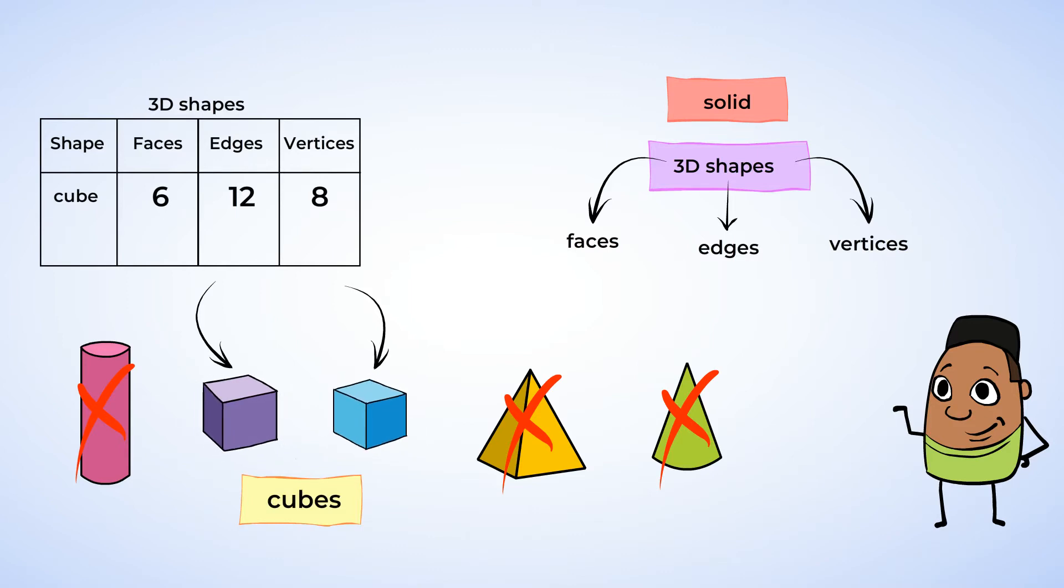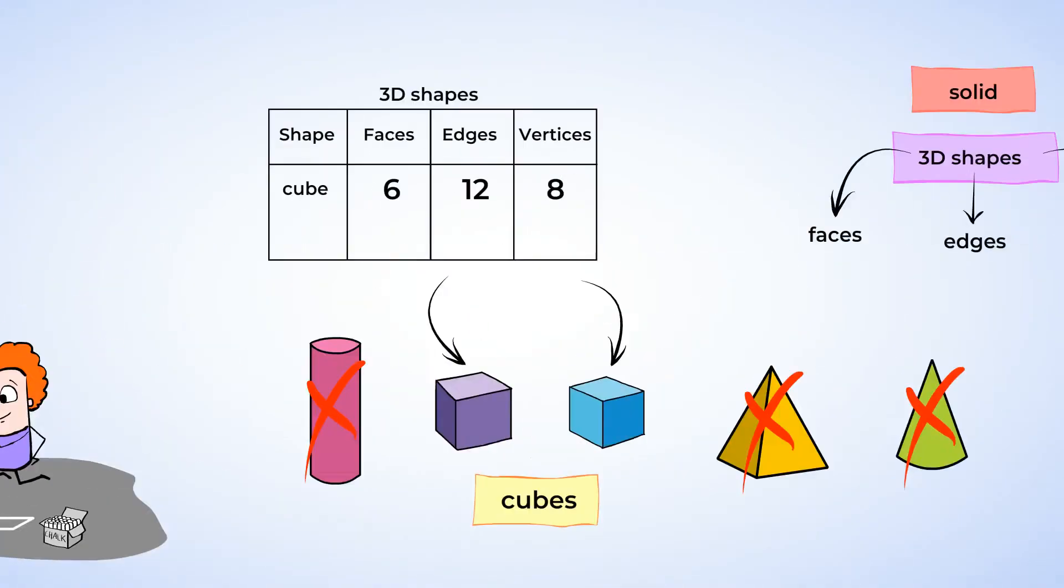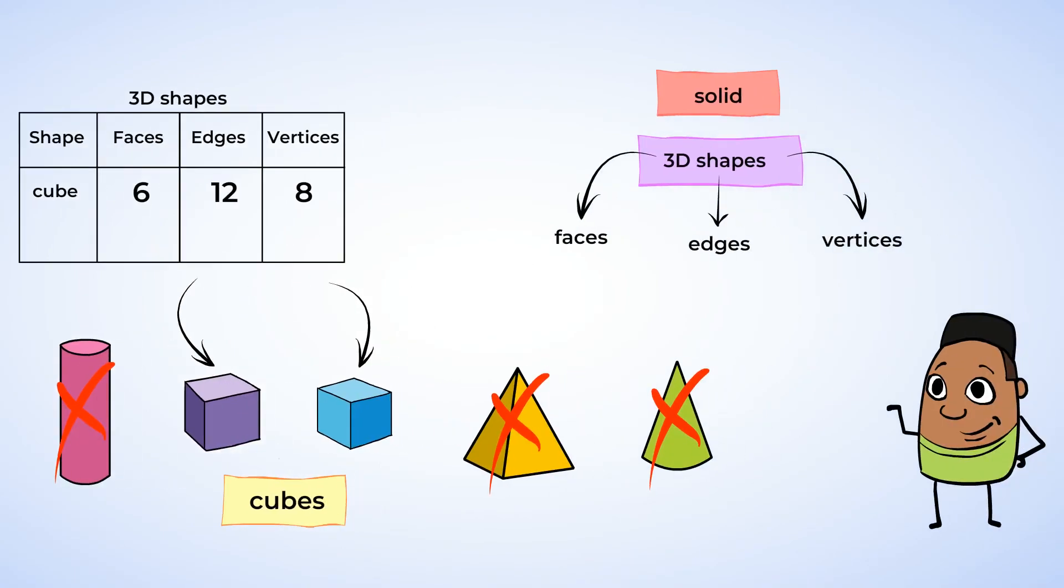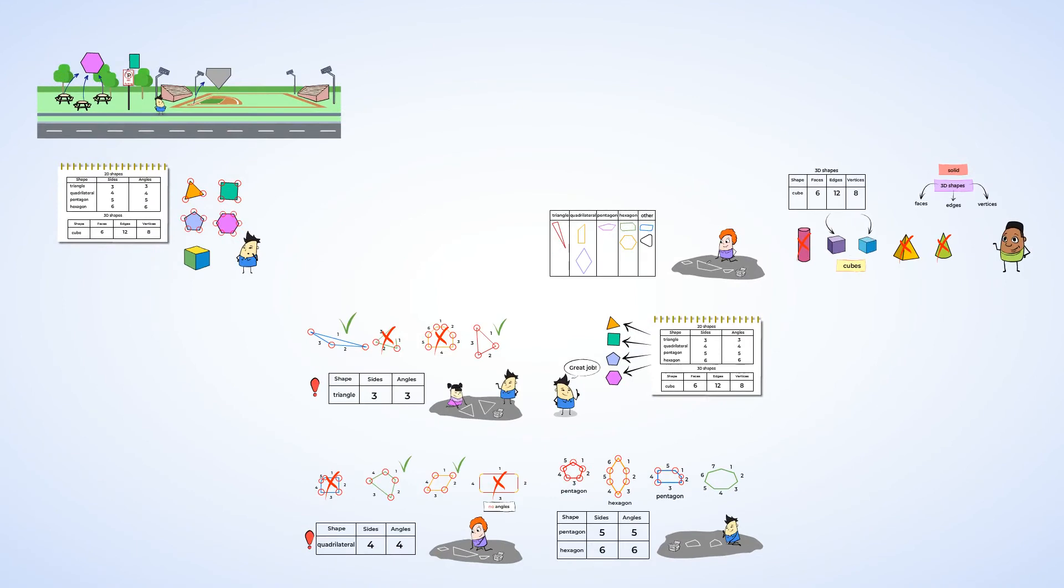You did some great work today. Fantastic! You counted sides and angles of 2D shapes to determine if they were triangles, quadrilaterals, pentagons, hexagons, or none of those. You were also able to find cubes by looking at the shape of faces on different 3D objects. See you soon, mighty owls, little helpers!